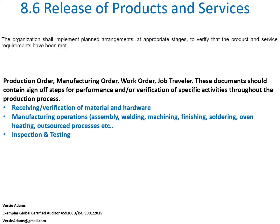These are going to vary from company to company depending on what the company is building and what they produce for their end customers. Typically I'm going to look for receiving verification of material and hardware. I'm going to look for specific manufacturing operations identified, such as assembly, welding, machining, finishing, soldering, oven heating, outsourced processes, etc. It's going to vary quite a bit depending on what the company is building. Also inspection and testing — at various stages throughout the build or assembly of a product, I'm going to be looking for inspection and testing operations.